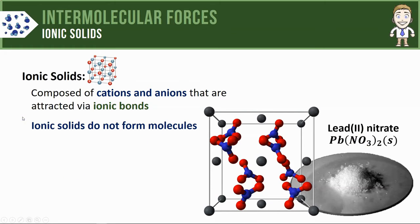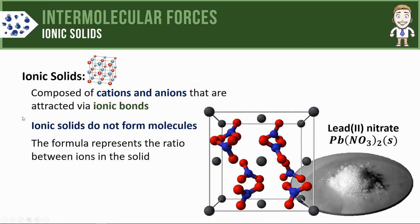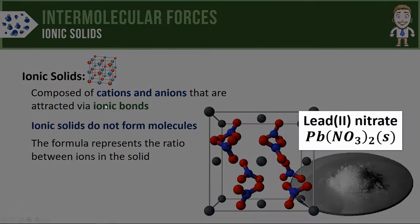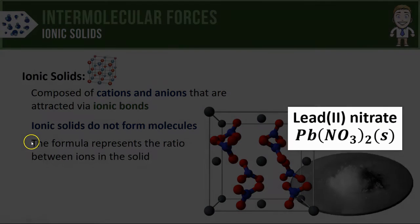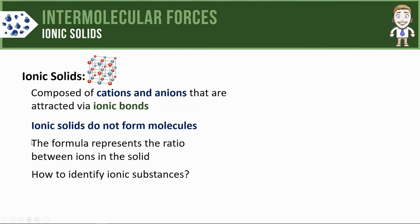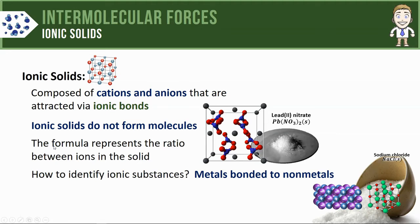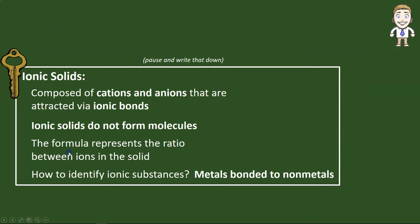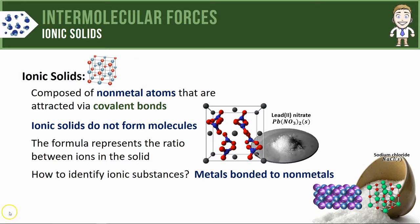It's worth mentioning that ionic solids do not form molecules. Anytime you see a formula for an ionic substance, that formula simply represents the ratio between the ions in the solid. In lead nitrate, for example, you'd find one lead for every two nitrate ions. How you identify ionic substances is by looking for metals bonded to non-metals, as we saw in both of our examples.